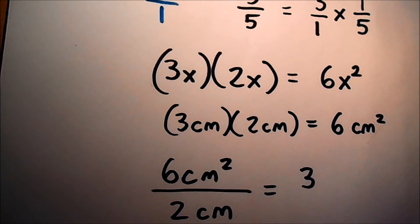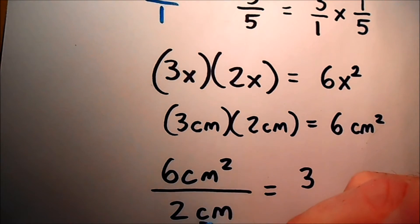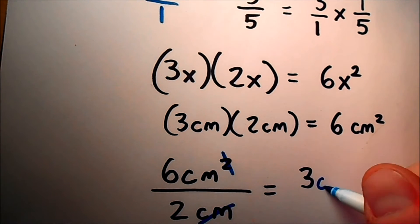So that means I'm going to have 1 centimeter unit left in my numerator. My centimeters cancel, and my squared cancels. I'm left with just centimeters, so I wind up with 3 centimeters. Are you with me so far?